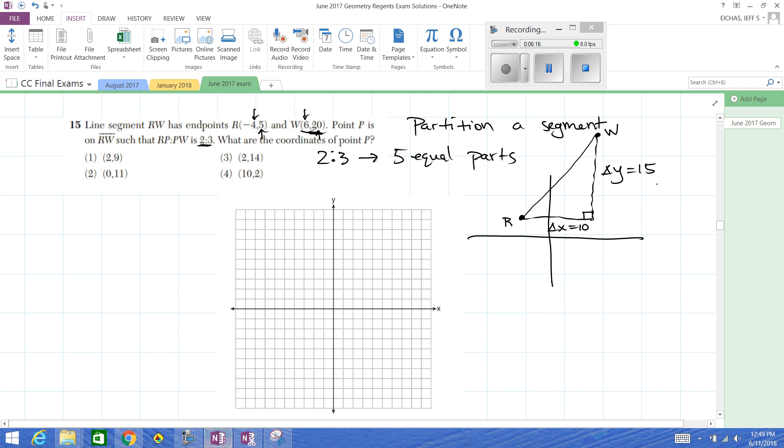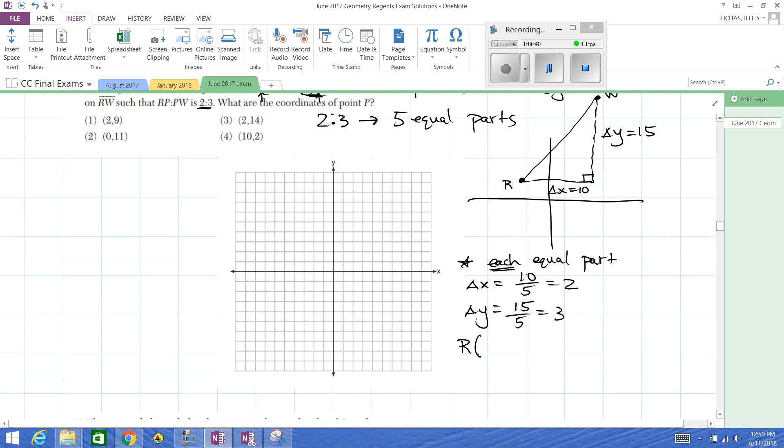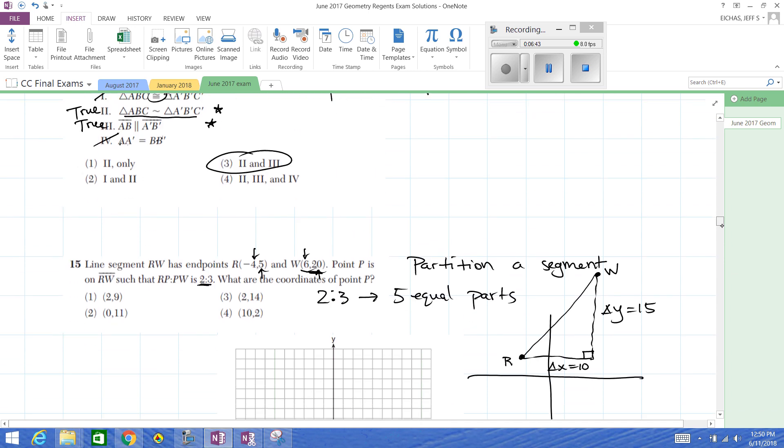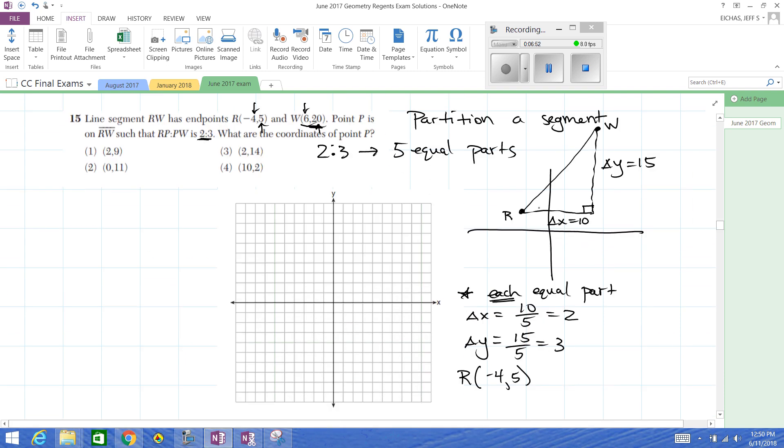So each move, so each equal part, right, you're going to take a change in X of ten divided by five, so two. Your change in Y is going to, for each, is going to be fifteen over five, which is three. So one of the ways I do this is I move from R at negative four, five. And I'm going to move right two up three. If you look at the direction, it is moving right two up three, right two up three. We're going to do that a couple of times. Right two up three, right two up three, so that we create five equal parts.